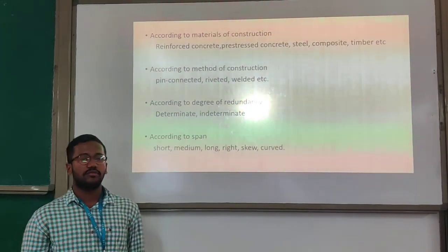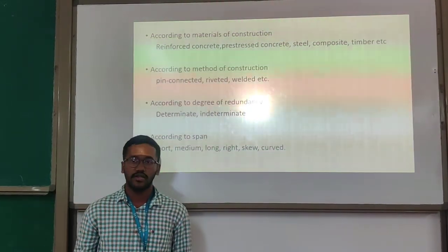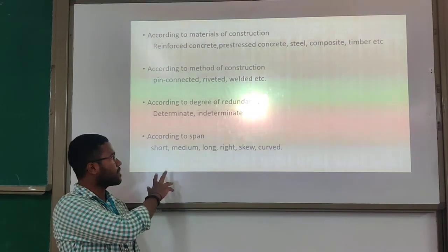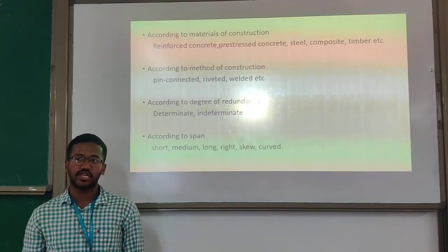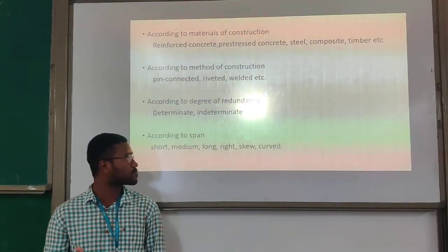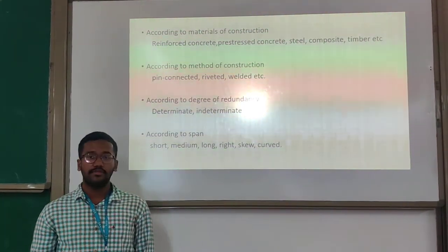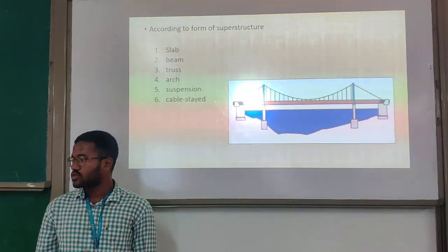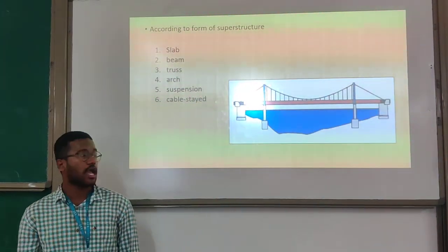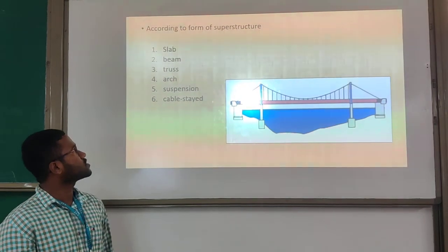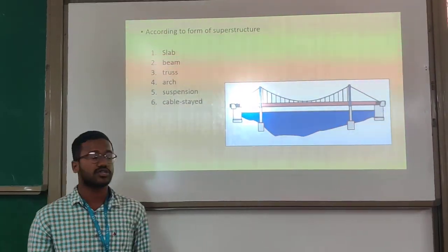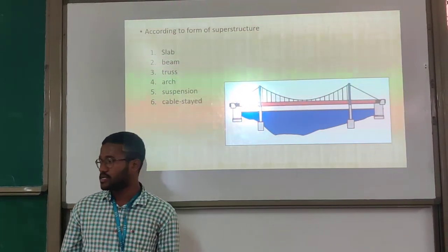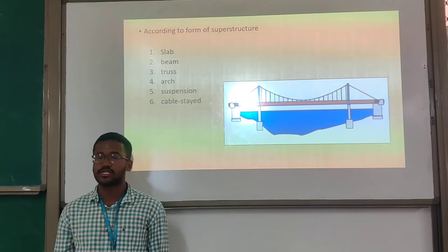Regarding the degree of redundancy, a bridge can be determinate or indeterminate in type. In terms of span, bridges can be short span or long span, and they can also be of a curved nature. According to the form of the superstructure, bridges are divided into slab, beam, truss, arch, suspension, and cable-stayed types.